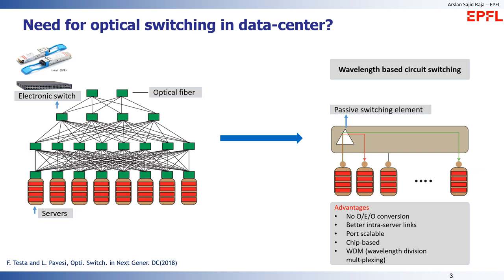Optical circuit switching is proposed as an alternative method. In this method, connections between different servers can be established using different colors of light and a switching element — for example, if the first server wants to talk to the last server, they can do so using green light. Advantages include no optical-to-electrical conversion, fewer transceivers, better intraserver links for applications such as cloud computing, and port scalability through chip-scale fabrication.